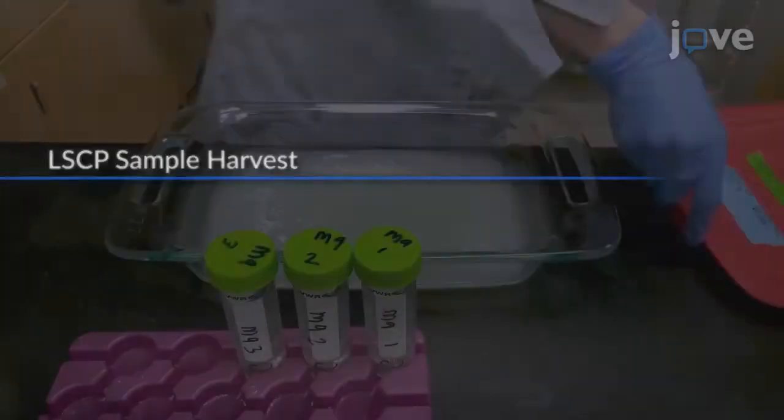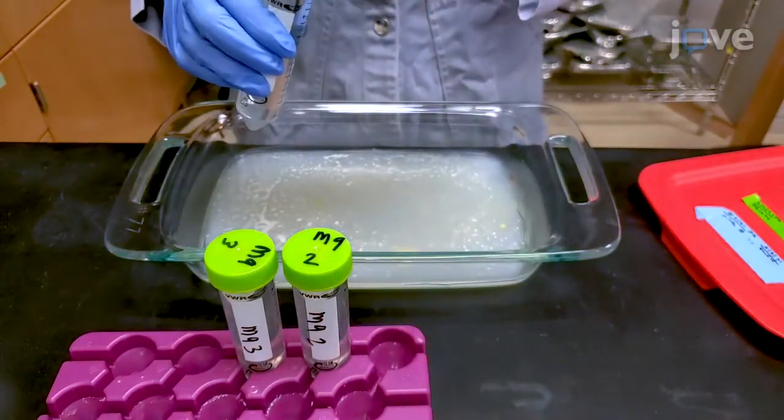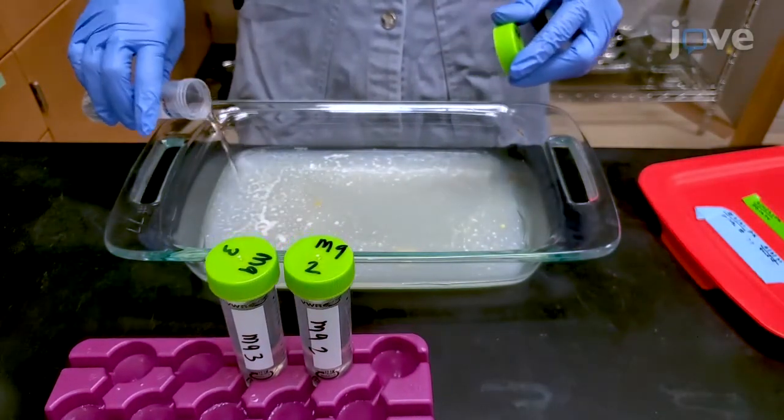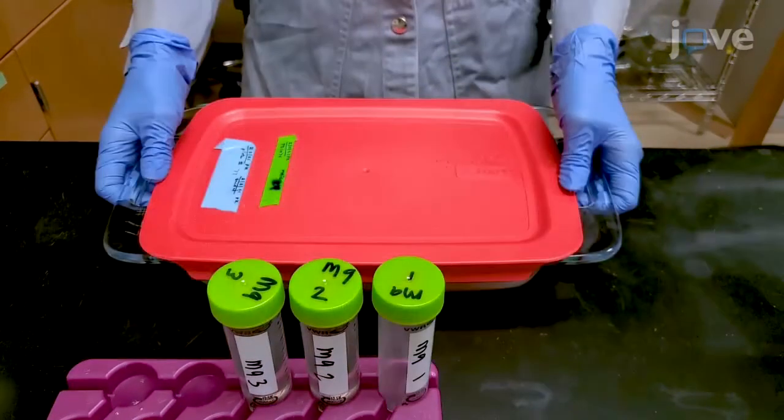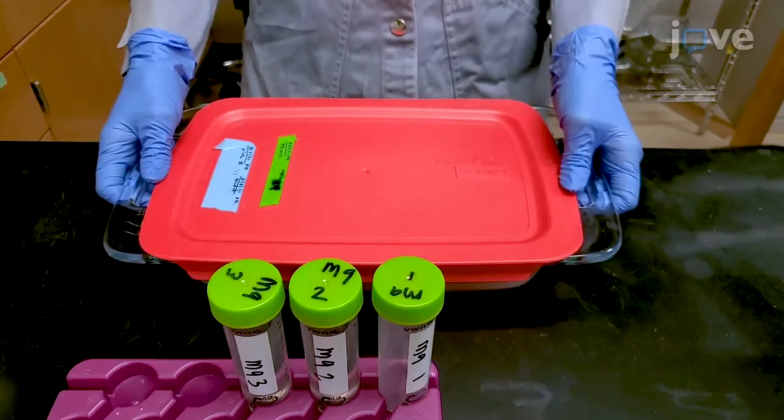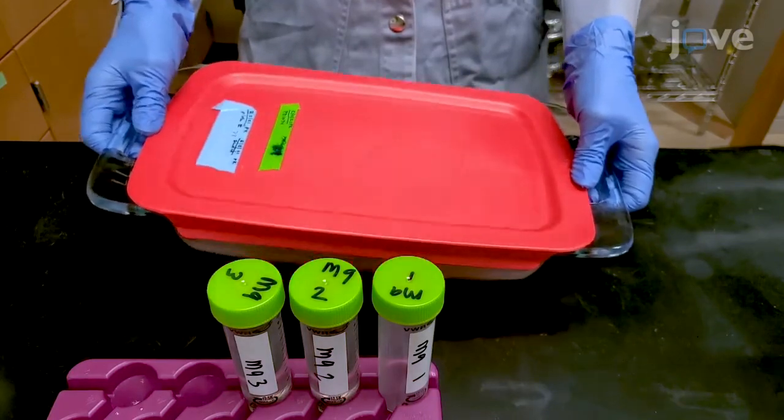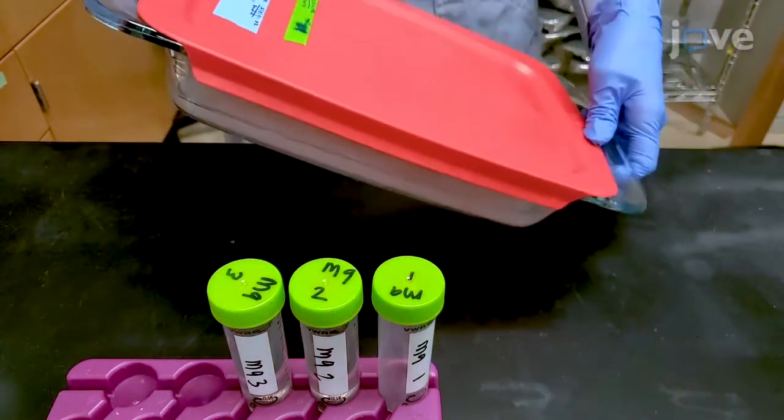To harvest samples from large-scale culture plates, pour 50 milliliters of M9 solution onto one large-scale culture plate surface and swirl the plate to ensure that the M9 covers the entire nematode growth medium agarose surface.